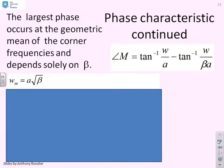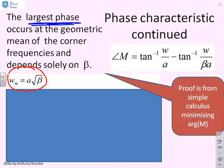Where does the largest phase occur? This is quite important because it's something we will use later in design. The largest phase occurs at the geometric mean of the corner frequencies, omega_m equals A over root beta. That's intuitively obvious, but if you want to prove it, use calculus — differentiate the phase formula with respect to omega, find the maximum, and you'll see it's at the geometric mean, A root beta.